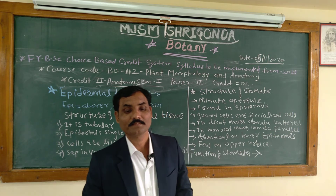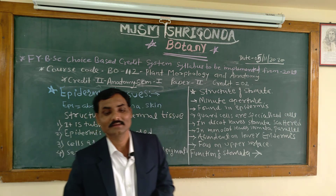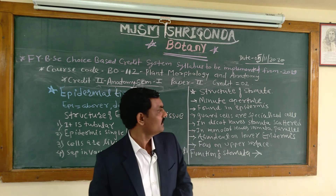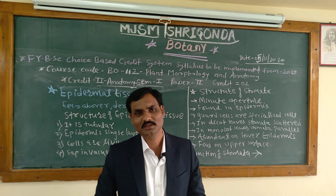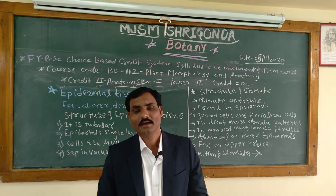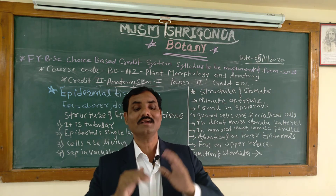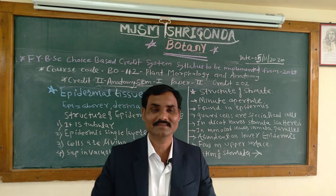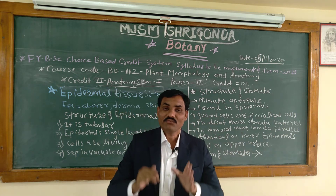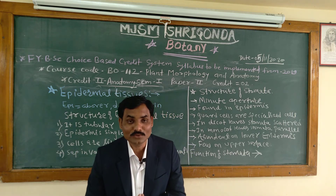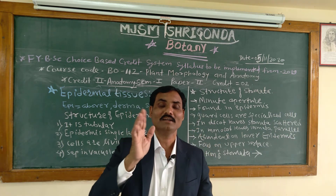Another component is stomata. Stomata are small openings present on the upper and lower surface of leaves, and sometimes on the stem as well. These are minute apertures bounded by two guard cells — kidney-shaped structures. Stomata are found mainly in the epidermis of leaves and the younger parts of the stem.